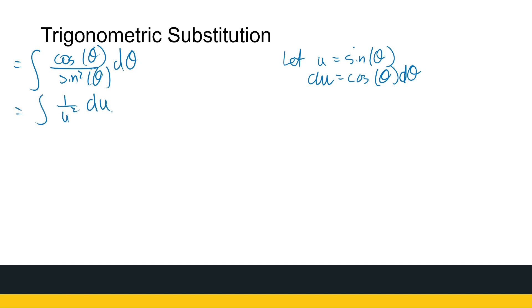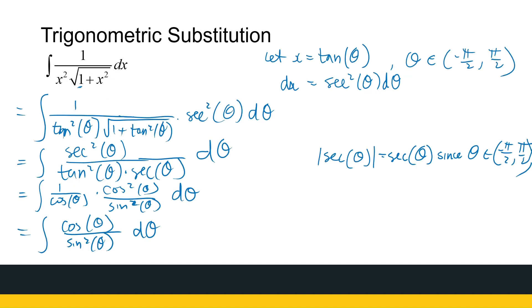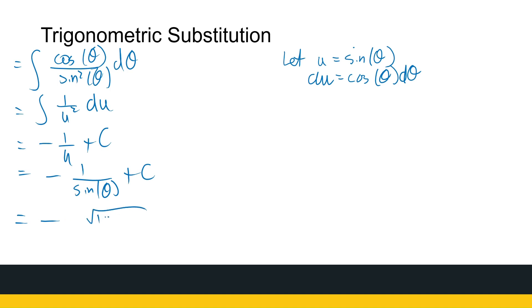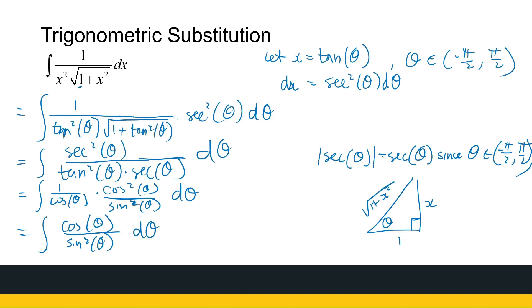That integral equals minus 1 over u plus c, which we can now express in terms of theta as minus 1 over sine theta plus c. Going back to the previous page, tan theta equals x, so in a right triangle with opposite x and adjacent 1, the hypotenuse is the square root of 1 plus x squared. Therefore sine theta equals x over the square root of 1 plus x squared, and 1 over sine theta equals the square root of 1 plus x squared over x. The final answer is minus the square root of 1 plus x squared over x plus c.